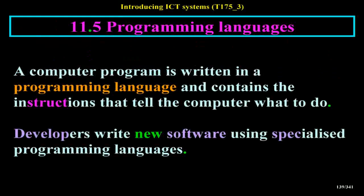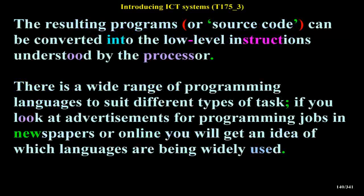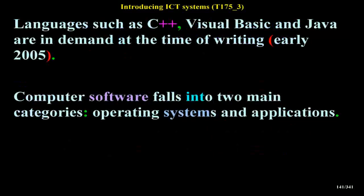Programming Languages: A computer program is written in a programming language and contains the instructions that tell the computer what to do. Developers write new software using specialized programming languages. The resulting programs or source code can be converted into the low-level instructions understood by the processor. There is a wide range of programming languages to suit different types of tasks. Languages such as C, Visual Basic and Java are in demand at the time of writing (early 2005).